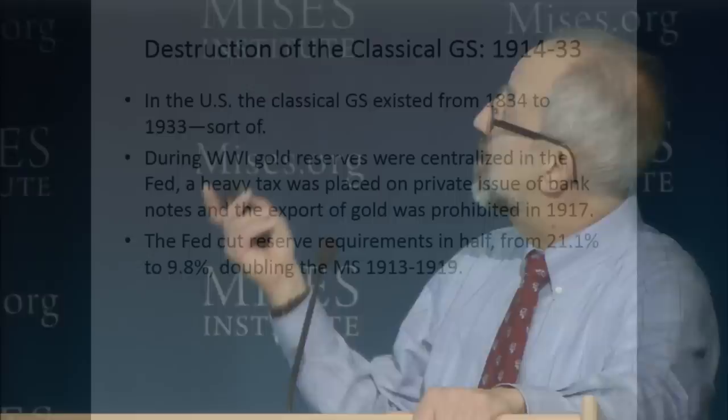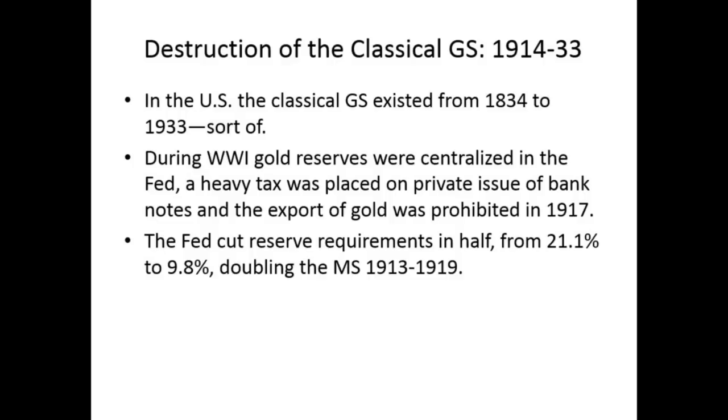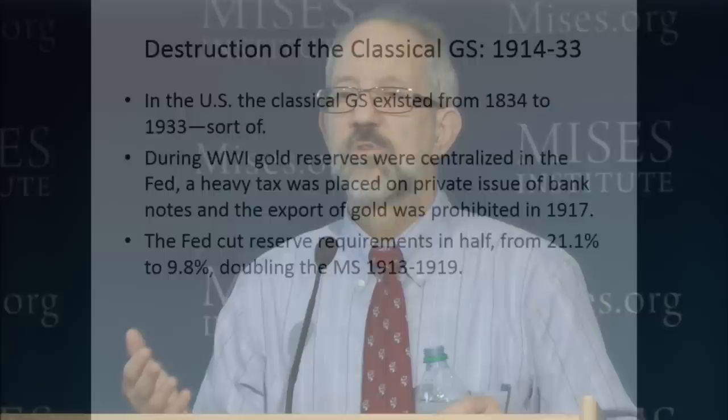The end began in 1914; it ended by 1933 in the United States. Some people say the classical gold standard was unstable and collapsed in the 1930s — no, it didn't collapse. As Mises pointed out, it was destroyed by deliberate government policies in which they tried to loosen these golden handcuffs so that it could inflate to pay for wars or to get out of depressions.